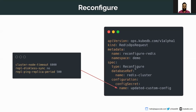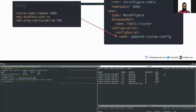In the ops request spec, the metadata section has the name and namespace — the namespace should be the same as the database namespace. In the database reference we give the name of the database we want to update. In the configuration field there is a field called 'configSecret' where we provide the secret name. Let's see how things are progressing.